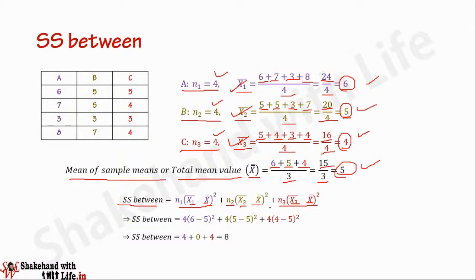Now put the values of x1 bar, n1, n2, x2 bar, n3, x3 bar, and x double bar into the equation. n1 is 4, x1 bar is 6, x double bar is 5; n2 is 4, x2 bar is 5, x double bar is 5; n3 is 4, x3 bar is 4, and x double bar is 5.